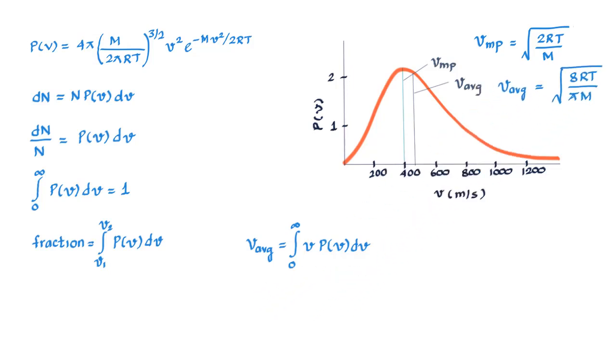Now we can also find the v square average the same way, but the integration would be for v square P(v) into dv. So v square average equals zero to infinity v square P(v) dv.